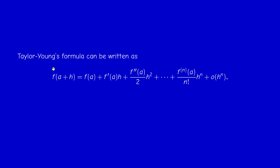We can write Taylor-Young as f(a+h) = f(a) + f'(a)h + ··· + f^{(n)}(a)h^n/n! + o(h^n). Note that O(h^{n+1}) implies o(h^n), but not conversely. This concludes the lectures. In the next video I will solve the exercises of chapter four, which will conclude the course. Good luck in your exams — thank you for your attention and see you next time.